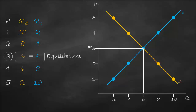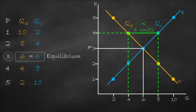Now let's look at what happens if we have a price level above our equilibrium price. Our equilibrium price is 3, but let's say price is at 4. At price of 4, it intersects the demand curve giving a quantity demanded of 4, and it intersects the supply curve giving a quantity supplied of 8. Since quantity supplied of 8 is bigger than quantity demanded of 4, the difference is 8 minus 4 equals 4 units — so we have excess supply, which means a surplus of 4 units.